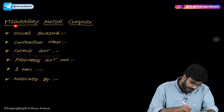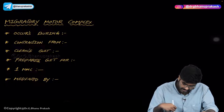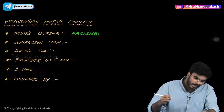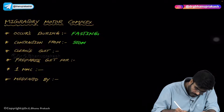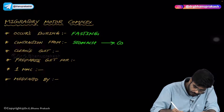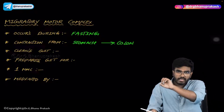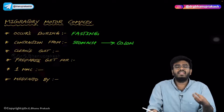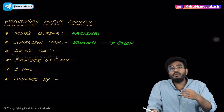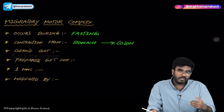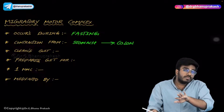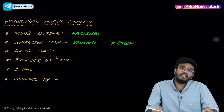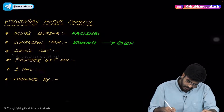Now let's talk about the Migratory Motor Complex (MMC), which is a GI motility that occurs during fasting — when there is no food in the GI tract. A powerful wave of contraction starts from the stomach and moves all the way to the colon. This happens to clear any leftover undigested food particles, cleaning the GI tract for the upcoming meal. The MMC acts like a broomstick or sweeper of the GI tract. When you're fasting, the pain and contractions you feel are nothing but the migratory motor complexes.